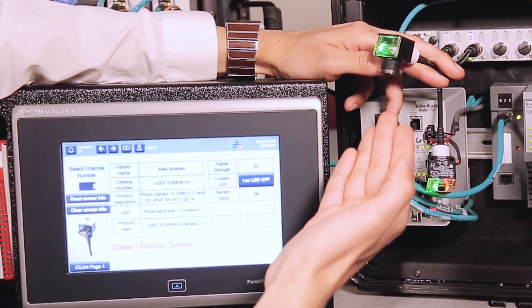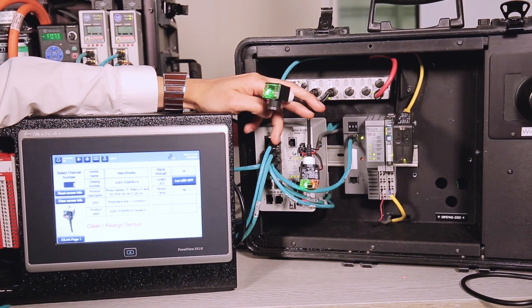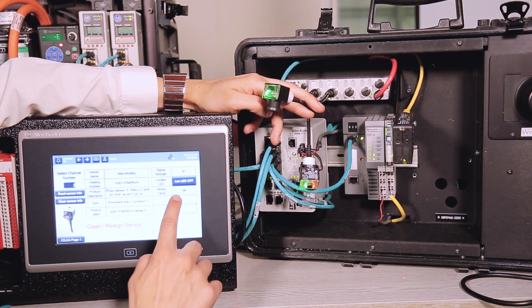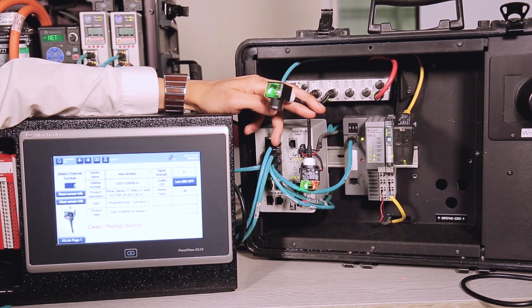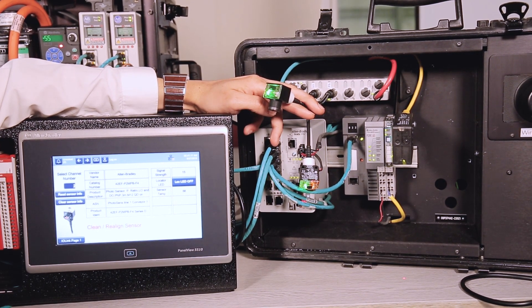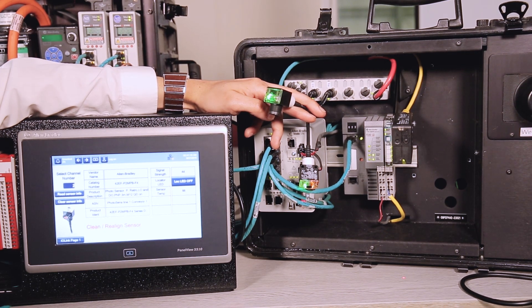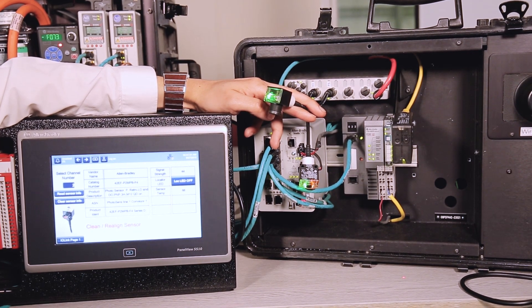Another function we've got turned on at the moment, if you say had a faulty sensor or a sensor that needed looking at, is the ability to turn on a locator LED within a sensor remotely from the HMI or the PLC. This allows your operative to go and find that sensor and replace or make what adjustments that need doing.